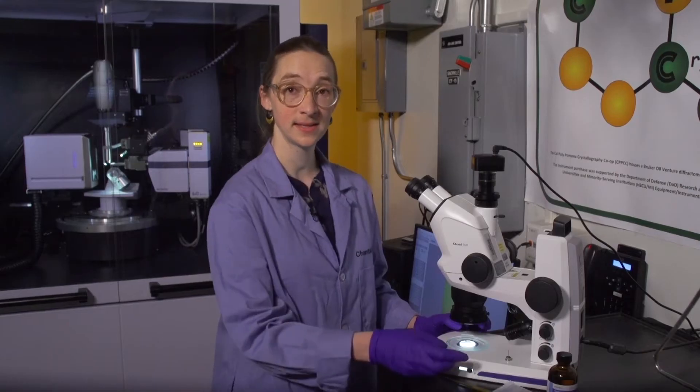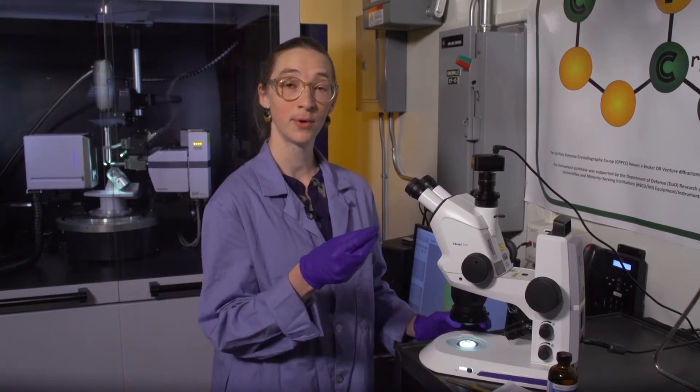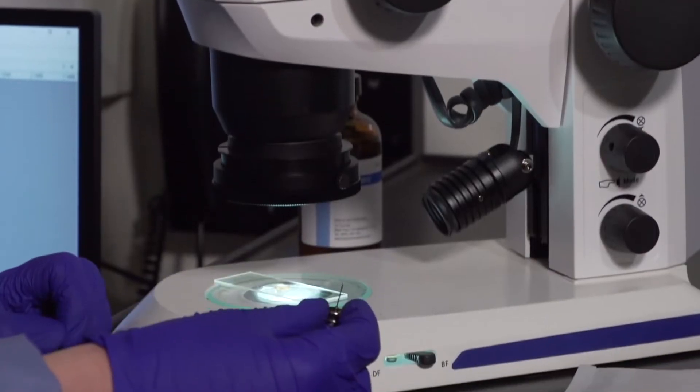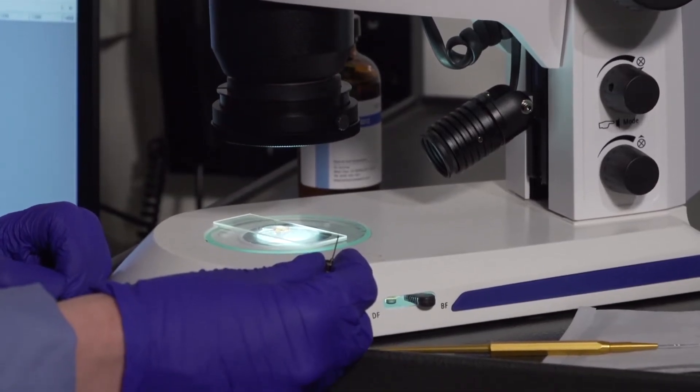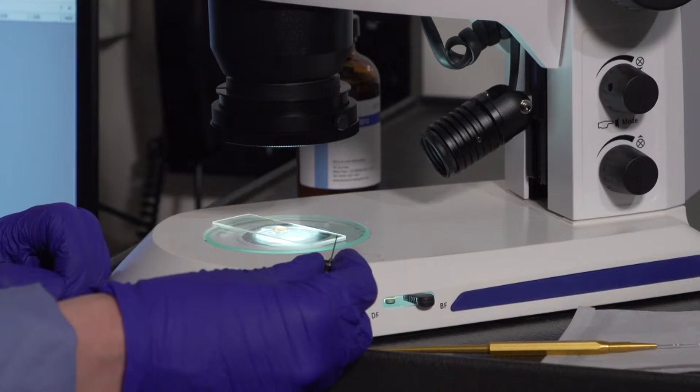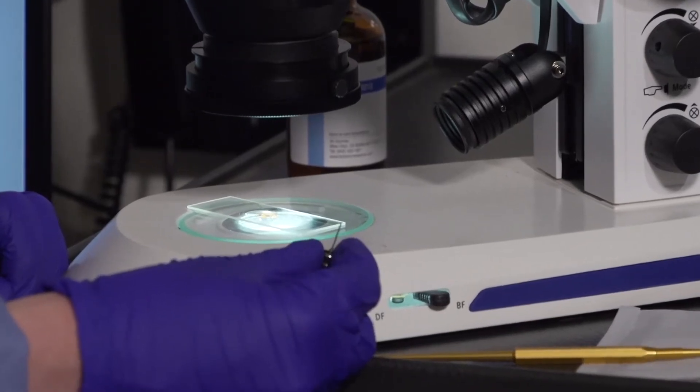Then take a sample holder or loop and scoop up or pick the crystal. The oil is sufficiently sticky to help the crystal stay on the loop, but you should transfer the sample to the x-ray diffractometer relatively quickly.